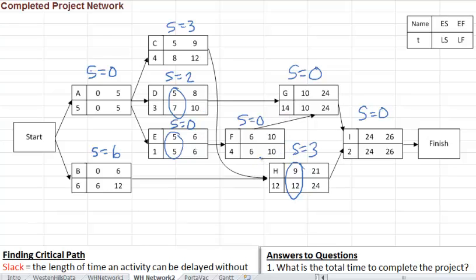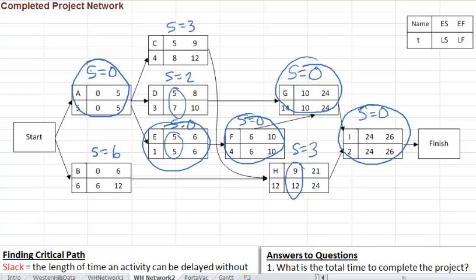And the critical activities are the ones with no slack allowed. No slack, no delay allowed. So that would mean if we were to go and circle the critical activities, A would be one of them. And then E, so we're just circling the activities with no slack. And here G and I.